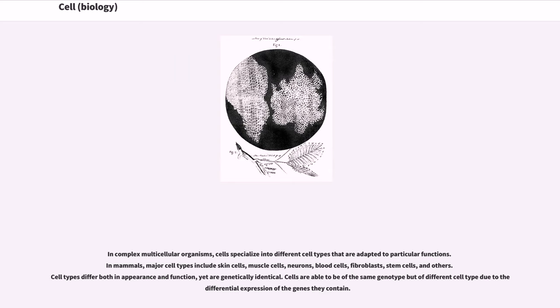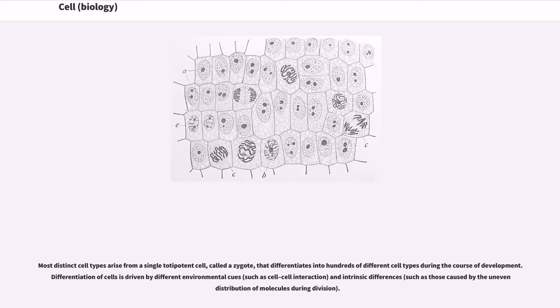Cells are able to be of the same genotype but of different cell types due to the differential expression of the genes they contain. Most distinct cell types arise from a single totipotent cell, called a zygote, that differentiates into hundreds of different cell types during the course of development. Differentiation of cells is driven by different environmental cues, such as cell-cell interaction, and intrinsic differences, such as those caused by the uneven distribution of molecules during division.